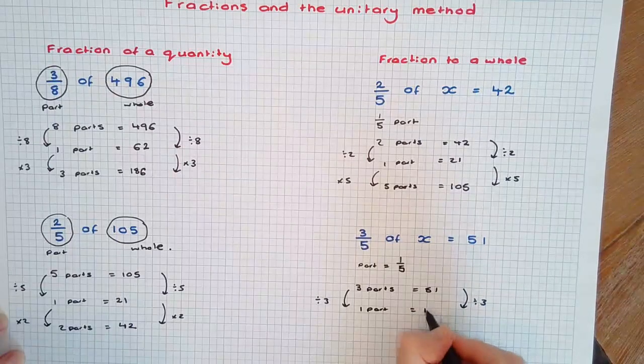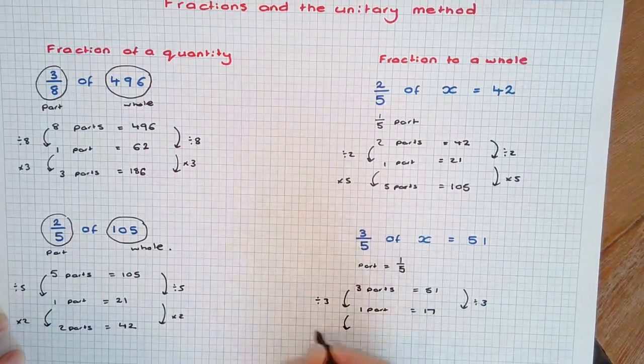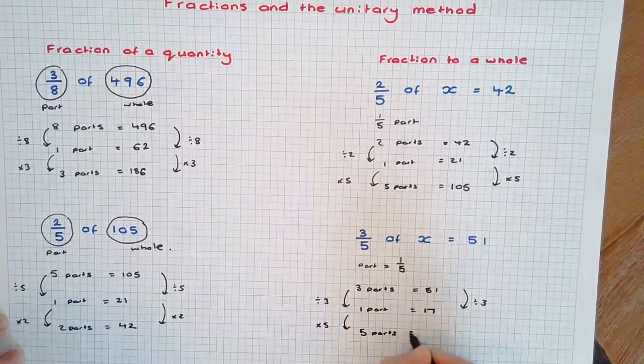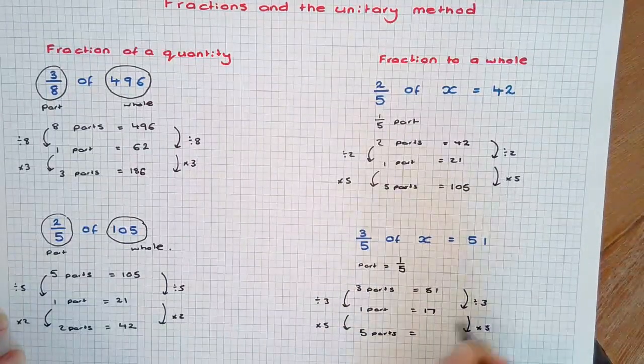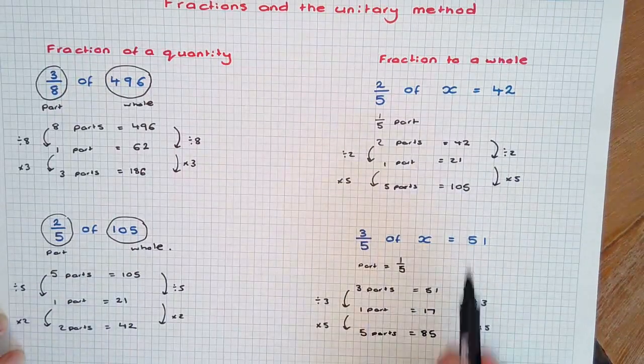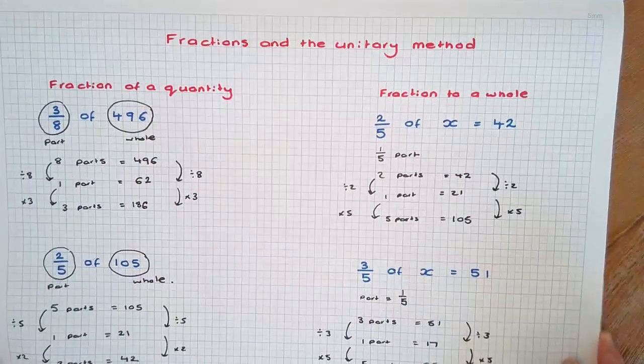51 divided by 3 is 17. We're after the whole, which is 5 parts. 17 times 5 is 85. That is, 3 fifths of 85 equals 51, using the unitary method with fractions.